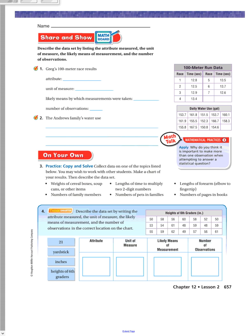Share and Show. Describe the data set by listing the attribute measured, the unit of measure, the likely means of measurement, and the number of observations. So number one, we need to look over here. You need to be sure that you are able to look at and read a graphic organizer in this lesson. Greg's 100-meter race results, so 100-meter run data. We're looking at the right graphic source. So the attribute was time to run race. This is the time that it took him to run the race. Unit of measure was in seconds.